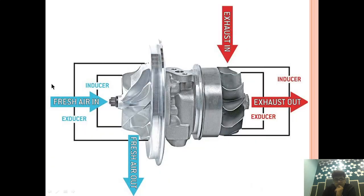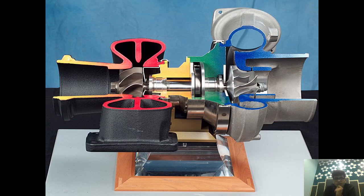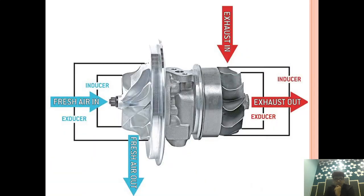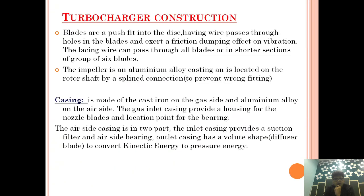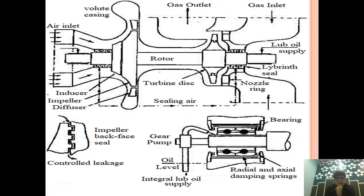Fresh air comes in and gets compressed, exiting out on the air side. This is the bearing section and this is the thrust bearing. This is how the cut section of an auxiliary engine turbocharger looks. I hope in this video I have given you a clear idea of how the turbocharger is constructed and the importance of each part — inducer, impeller, diffuser, turbo index, and nozzle — and how the gas is flowing. If you have any doubt, comment below and I will give the answer.